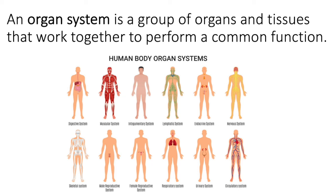The organ system is the next level of organization. Multiple organs and tissues come together to perform a common function, and there are 11 organ systems. On the next page we're going to talk about each of them in summary, but then throughout the semester we talk about each of them individually in detail.